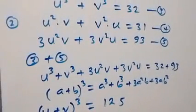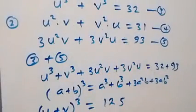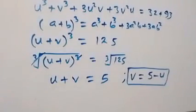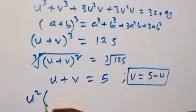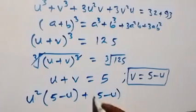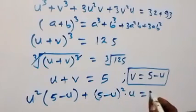Let's substitute v equals 5 minus u back into equation 4. Equation 4 is u squared times v plus v squared times u equals 31. Substituting, equation 4 becomes u squared times (5 minus u) plus (5 minus u) squared times u equals 31.